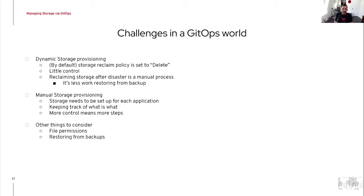With manual storage provisioning, the drawback is that storage needs to be set up for each application. Every time someone wants to deploy a new application that needs storage, it needs to go through a process. In GitOps it's easier — it's just a pull request — but the backend storage still needs to be provisioned. More control means more steps. Full automation with dynamic storage means less control; manual storage gives you more control but less automation. There's a balance you need to keep in mind.